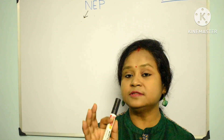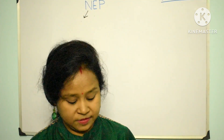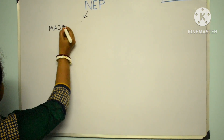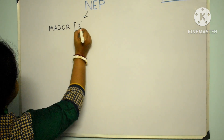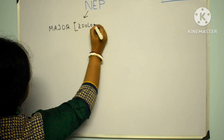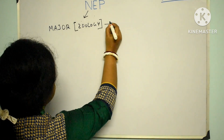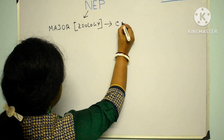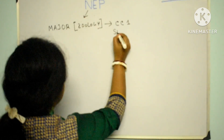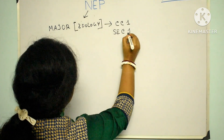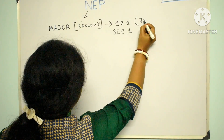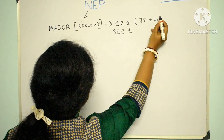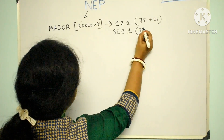CC1 and SEC1 — both of these, major students under Zoology are going to study under the major course. CC1 has 75 marks of theory and 25 marks of practical, and in SEC1 there is also 75 marks for theory and 25 marks for practical.